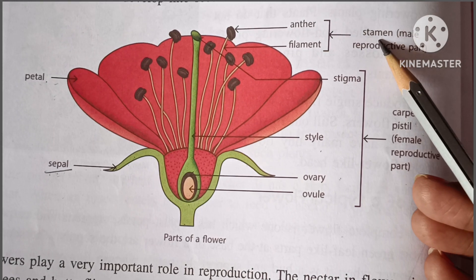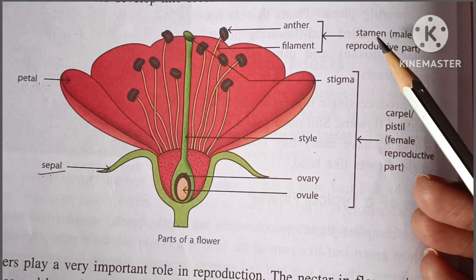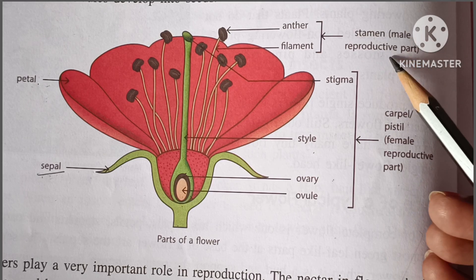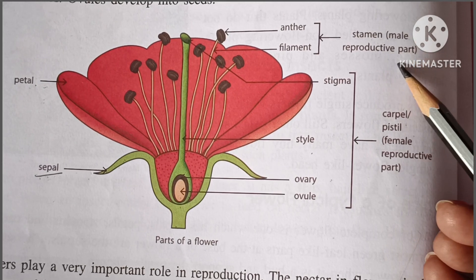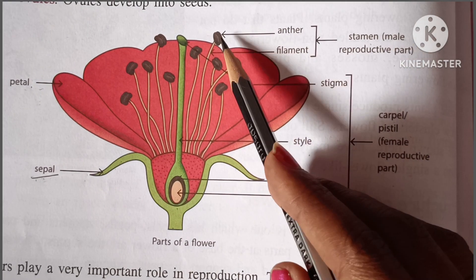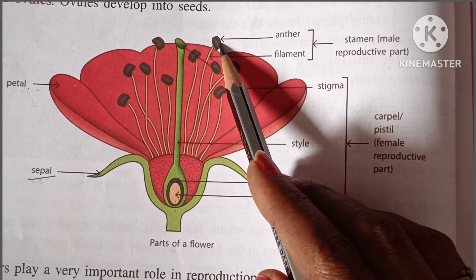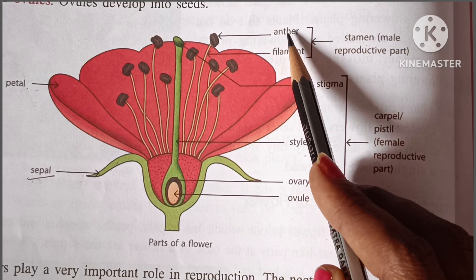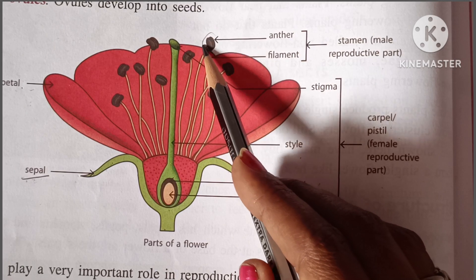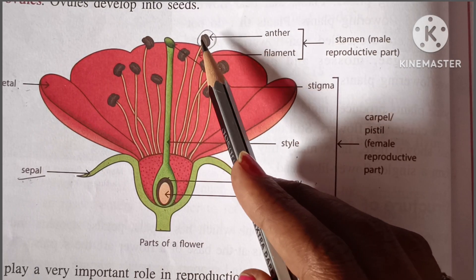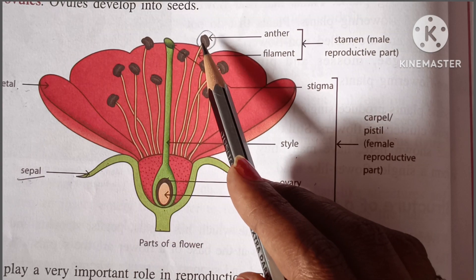The third one is the stamen. It is also the male part of the plant, or the male reproductive part of the plant. This stamen is divided into two parts: first one is the anther and second one is the filament. This anther contains the pollen sac, in which the pollen grain is formed.